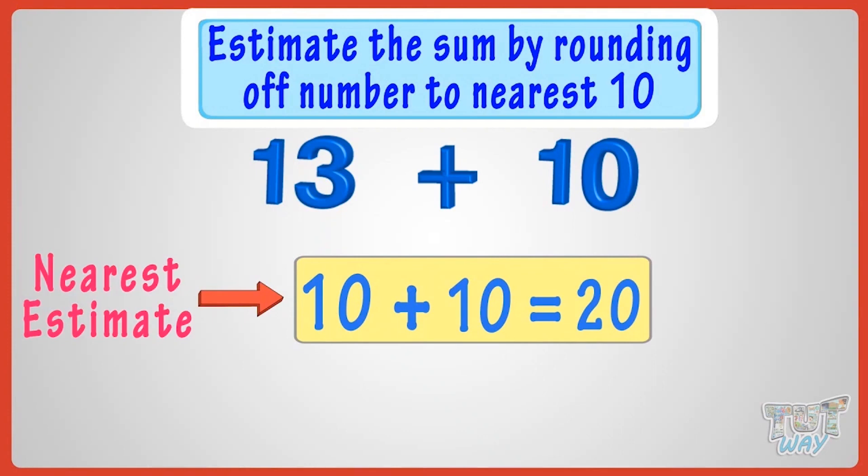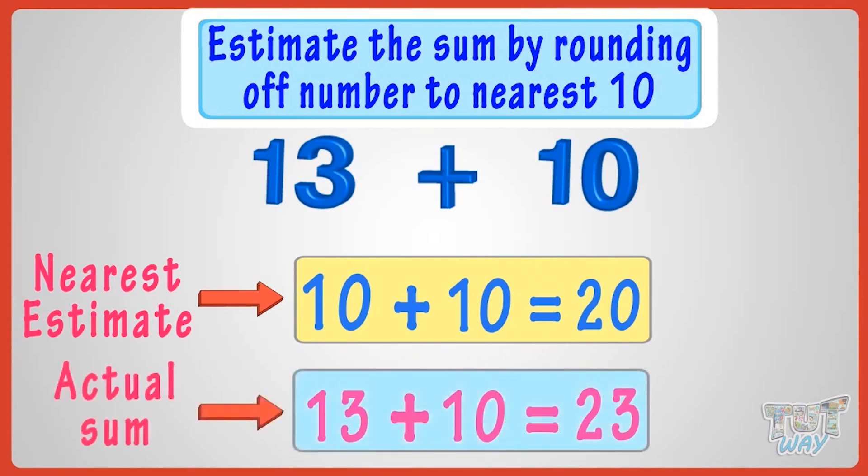Now, compare the estimate with the actual sum. Actual sum is 13 plus 10 equals 23. Yeah! Our estimate is very near! Good!